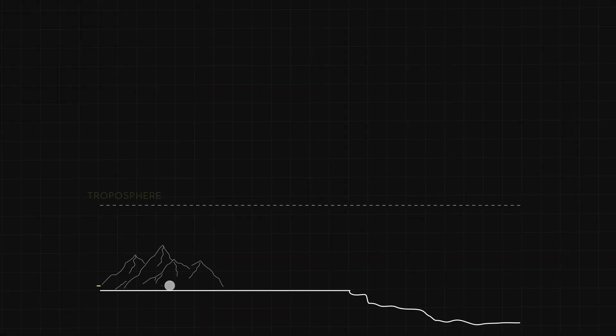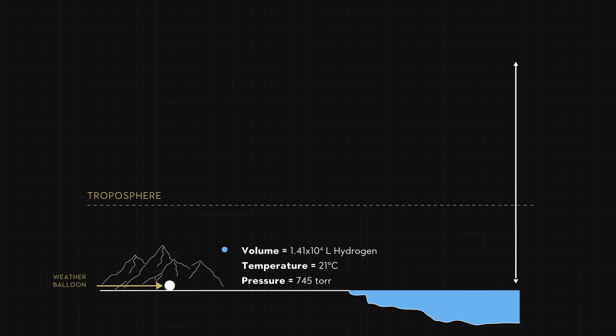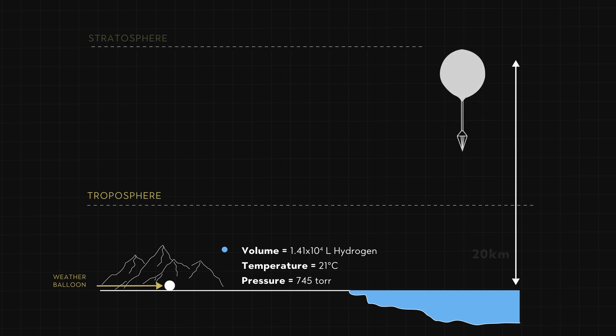We can use a weather balloon to help us visualize the application of this gas law as it races through the atmosphere. On the ground, before we launch it, the volume of the balloon is 1.41 × 10⁴ liters, the temperature is 21 degrees Celsius, and the pressure is 745 torr. When it reaches a height of 20 kilometers, way up in the stratosphere, the temperature has dropped to minus 48 degrees Celsius and the pressure has also dropped to 63.1 torr.